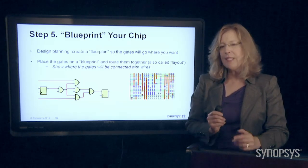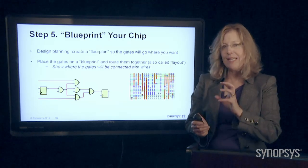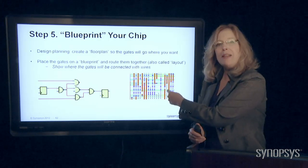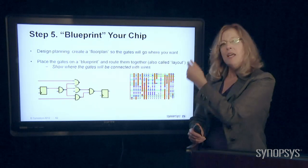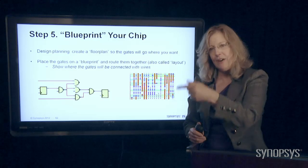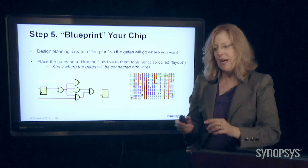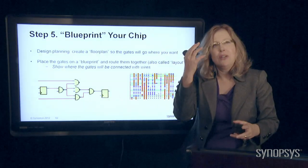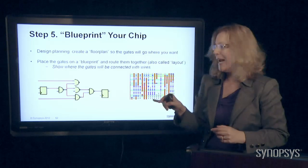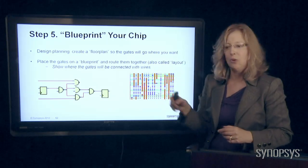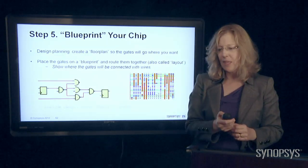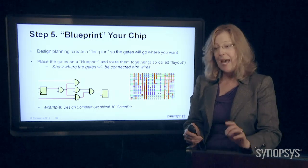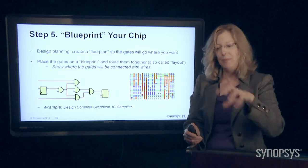What it actually looks like once everything is placed and routed is more like a picture of the layers where you can see things going up and down and in and out. This is more of a representation that lets you understand what the function is doing, but it actually looks quite different. Here are a couple of examples of products that do the place and route.